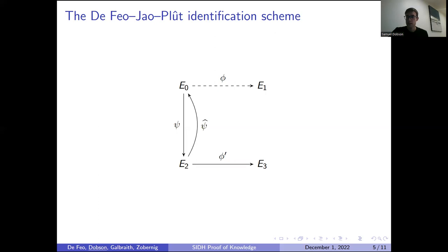The extractor proposed in the original proof of soundness essentially assumes that you can pull back this phi prime from the bottom along the dual of psi to E0 to recover the isogeny phi from E0 to E1.